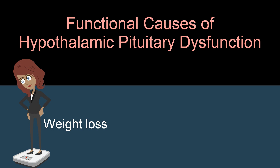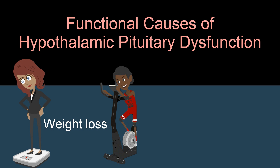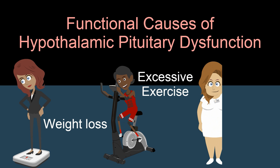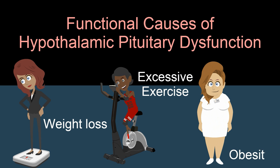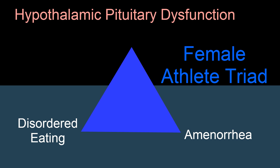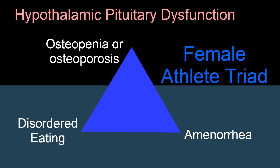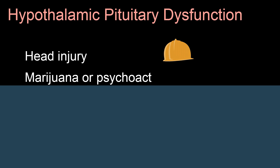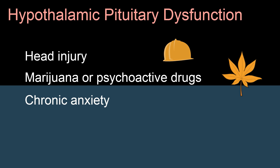More common functional causes include weight loss, excessive exercise, or obesity. Modifying the causal behavior can often restore menses. The female athlete triad — amenorrhea, disordered eating, and osteopenia or osteoporosis — demonstrates the need for sufficient caloric intake to enable the energy expenditure for the HPO axis to function. Other potential causes for HPO amenorrhea include head injury, marijuana, psychoactive drugs, chronic anxiety, anorexia nervosa, and chronic medical illness.